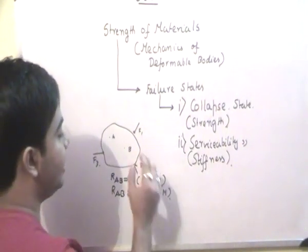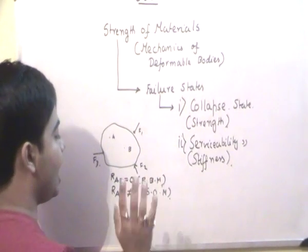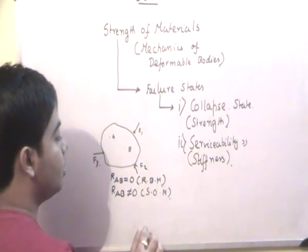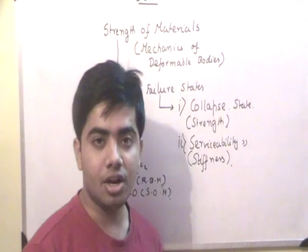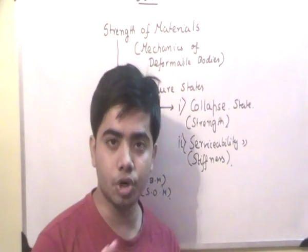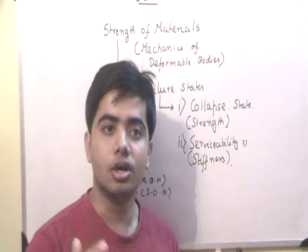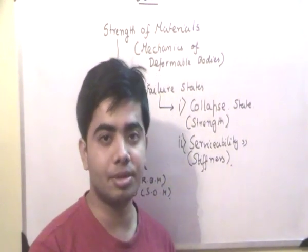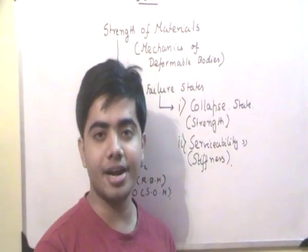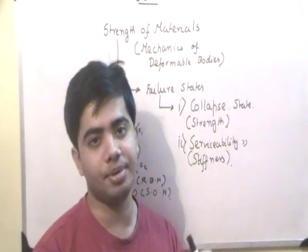And RAB is not equal to zero - that is, in strength of materials, we presume that we have certain deformations, and deformations will occur with forces. We will have some deformation, and as such, relative displacement between two points A and B will not be equal to zero.